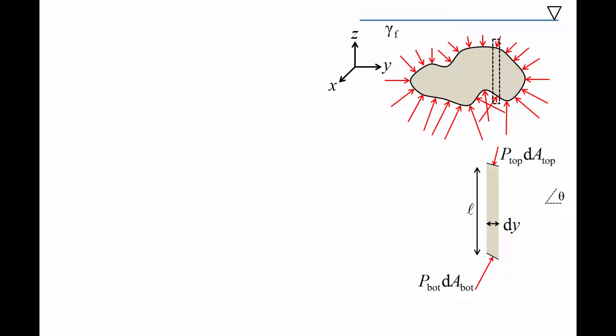Now we examine the fluid pressure force acting on a very thin vertical sliver of the object. The sliver has a width dy and a height l. The pressure force on the top of the sliver is equal to the pressure on the top, p top, times the small area on the top, dA top. The pressure force on the bottom side of the sliver is equal to the pressure on the bottom, p bot, times the small area on the bottom, dA bot. The force vectors act normal to the surface and are oriented at an angle theta relative to the horizontal. In general, the orientation angles may be different for each side, which means the area on the top may be different from the area on the bottom. We will call the orientation angle on the top theta top, and the orientation angle on the bottom will be called theta bottom.